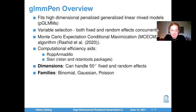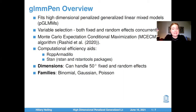By using RCPArmadillo, we can significantly reduce the required memory and increase the speed of the maximization step. Using STAN helps us to improve the computational efficiency of the expectation step. By utilizing the MCECM algorithm as well as these computational efficiency tools, the GLMM-PEN package can handle 50 or more fixed and random effects.